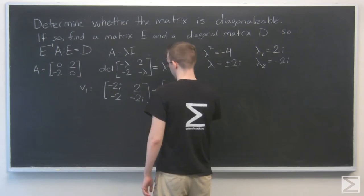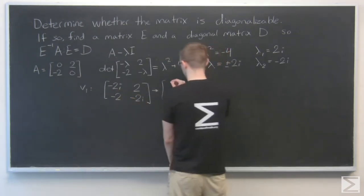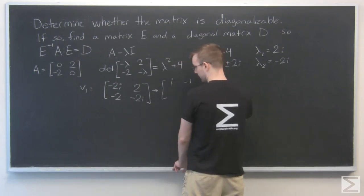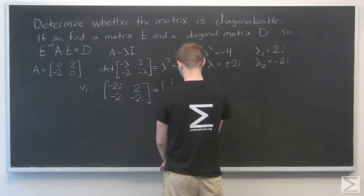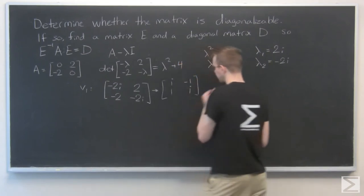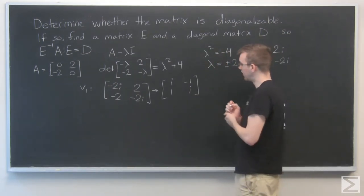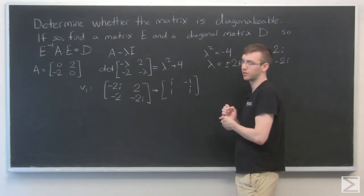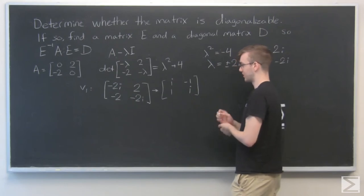So I can simplify this down. I'm going to divide this by negative 2, and that gives me i and minus 1. And I'll divide this by negative 2 as well, and that gives me 1 and i. I want to get this into reduced row echelon form. When I'm working with complex numbers, it's really easy, at least for me, to get confused. So I'm just going to take this real slow one step at a time.